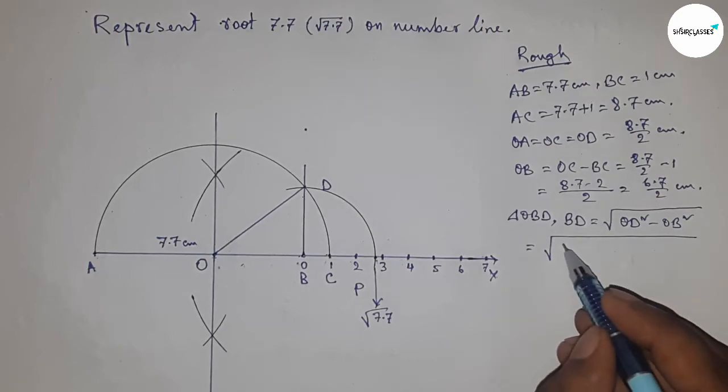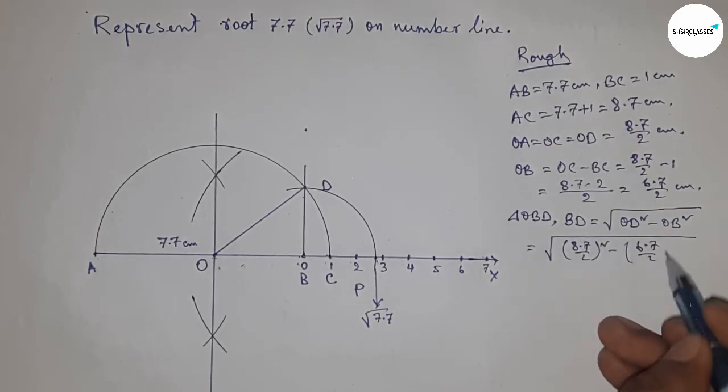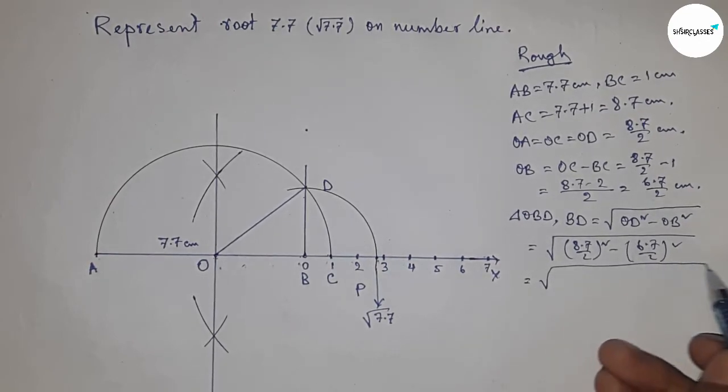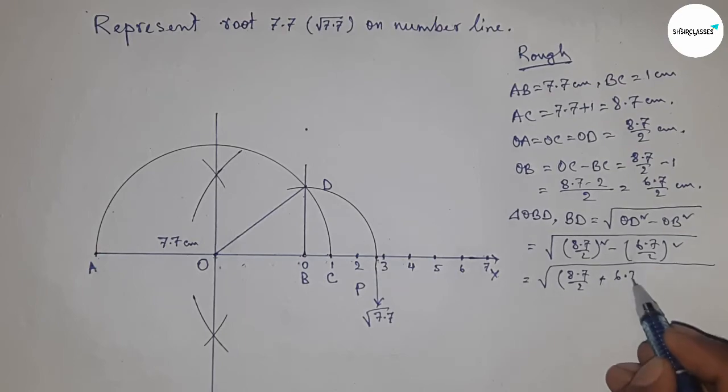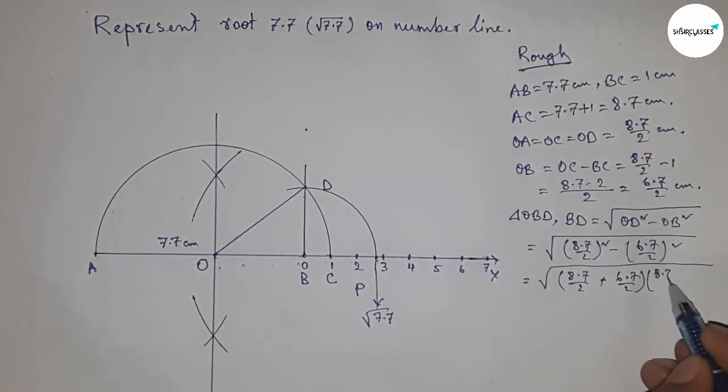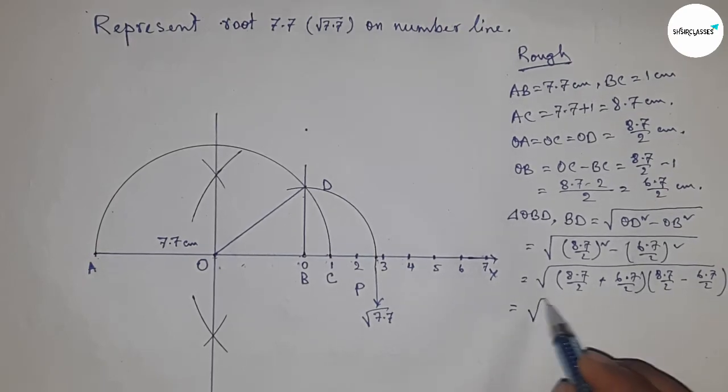Using the formula a² - b² = (a + b)(a - b), we apply this formula: (a + b) and (a - b).